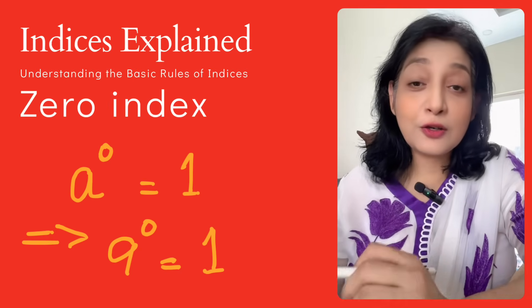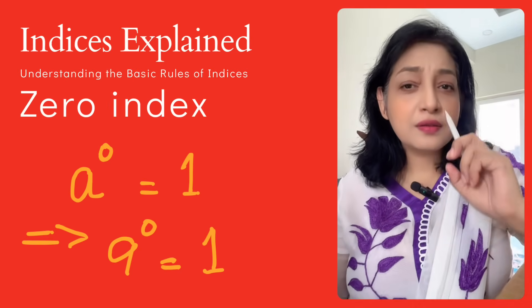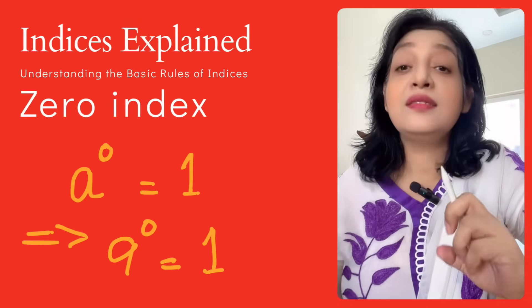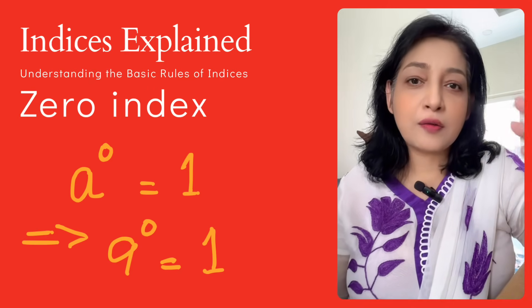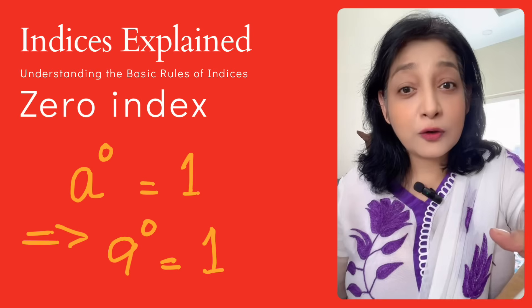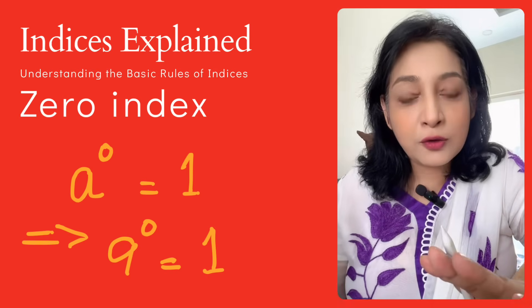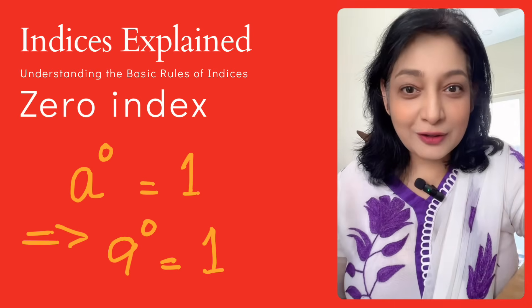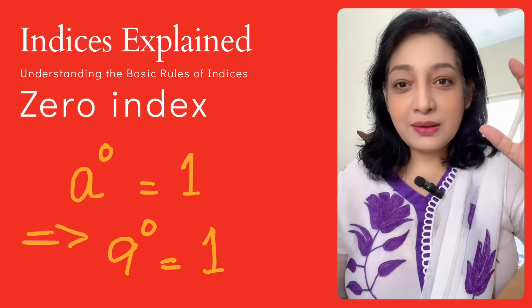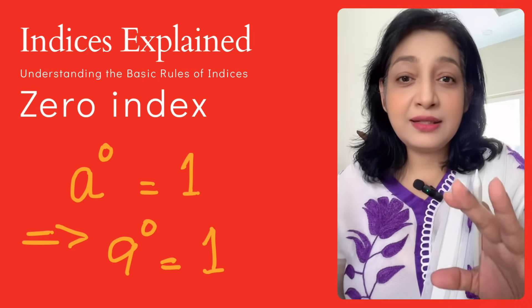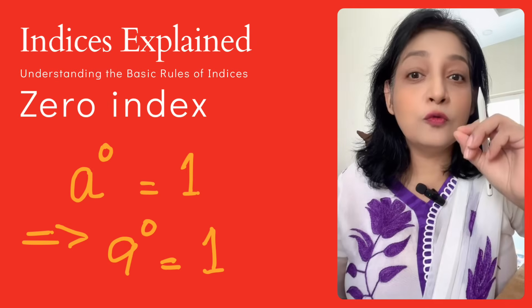Number 4 is the zero index. Anything to the power 0 is equal to 1. For example, 1 raised to power 0 equals 1, 2 raised to power 0 equals 1, 3 raised to power 0 equals 1, and so on. Any number raised to the power 0 equals 1.